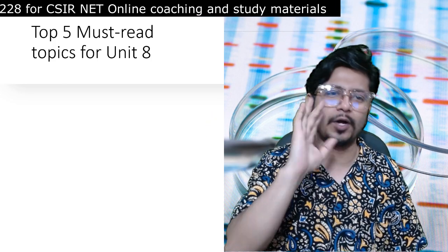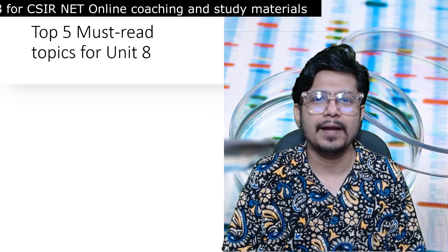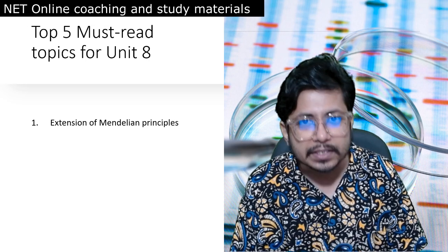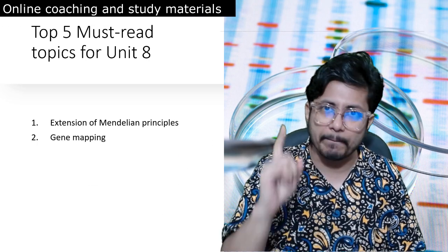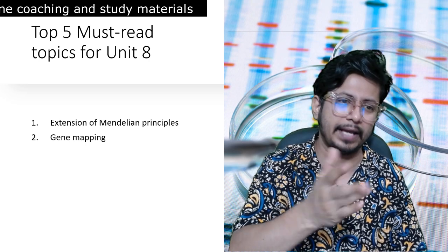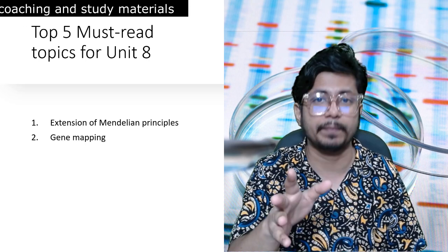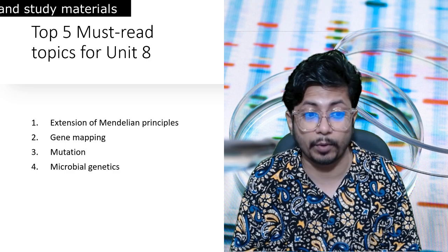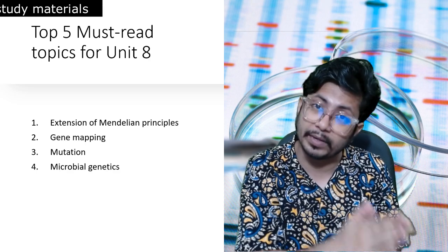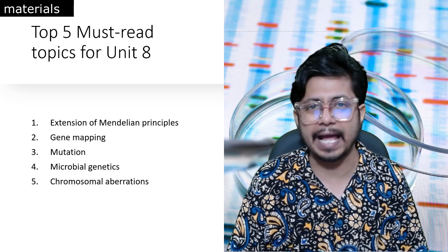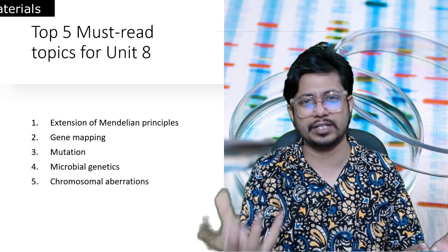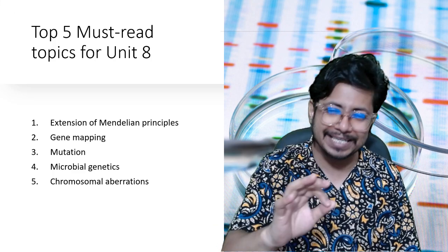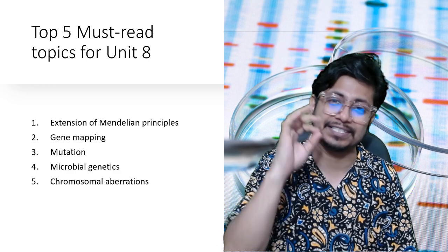Here is a bonus tip — the top five must-read topics for CSIR NET Unit 8, CSIR NET Life Science Genetics. First, extension of Mendelian Principle, that is non-Mendelian inheritance. Second, gene mapping — molecular mapping, tetrad analysis, any parts of mapping. Third, mutation. Fourth, microbial genetics — particularly the conjugation part, co-transduction, co-transformation frequencies are really important. Fifth, chromosomal aberrations — both numerical and structural aberrations are equally important.